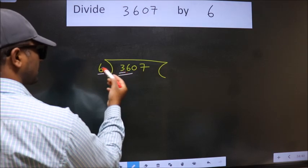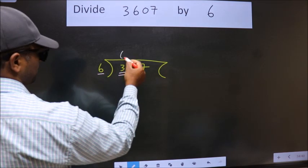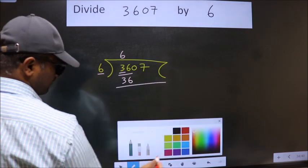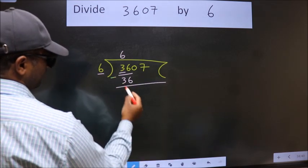When do we get 36? In 6 table. 6 times 6 is 36. Now we should subtract. We get 0.